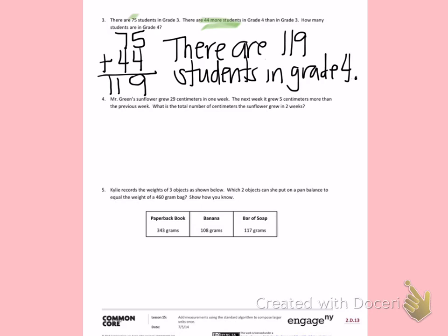Number 4. Mr. Green's sunflowers grew 29 centimeters in one week. The next week, it grew 5 centimeters more than the previous week. What is the total number of centimeters the sunflower grew in two weeks?